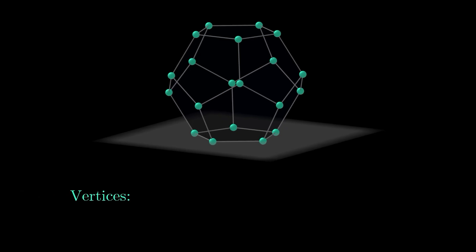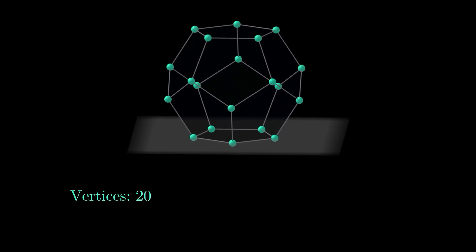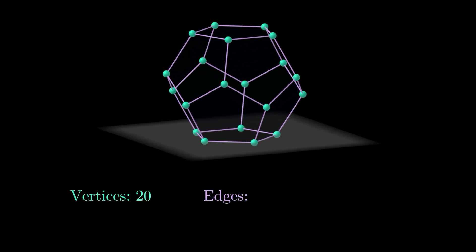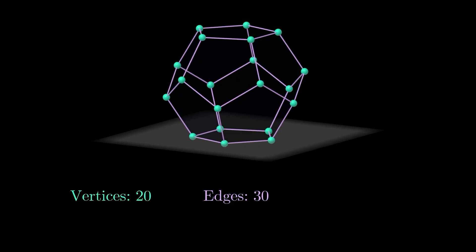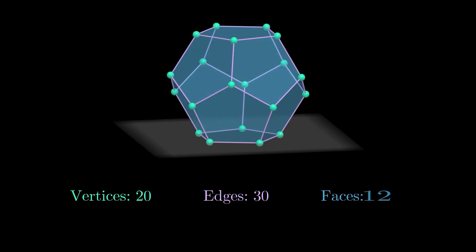This is a regular dodecahedron. If we count its vertices, we get 20. Looking at its edges, we see that there are 30. Finally, the name dodecahedron tells us that it has a total of 12 faces.